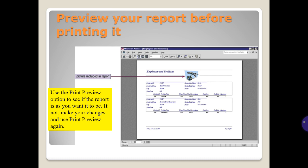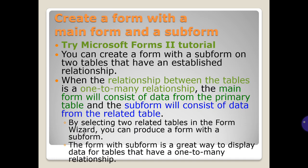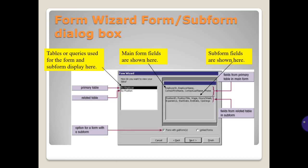Create a form with a main form and sub form — try the Microsoft Forms tutorial. You can create a form with a sub form on two tables that have an established relationship. When the relationship between the tables is a one-to-many relationship, the main form will consist of data from the primary table and the sub form will consist of data from the related table. By selecting to relate the tables in the Form Wizard, you can produce a form with the sub form.